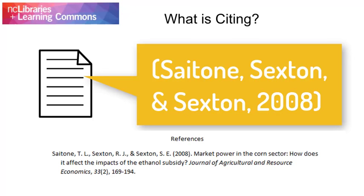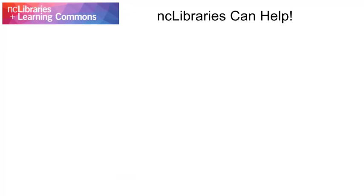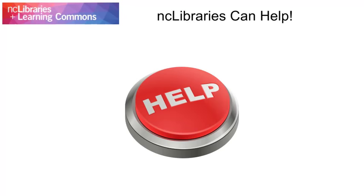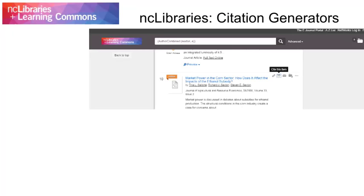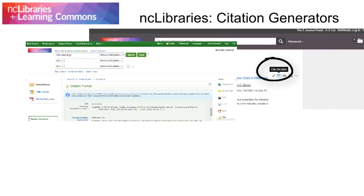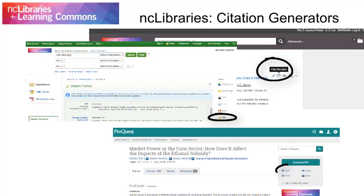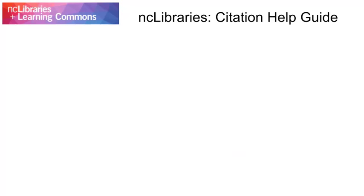There are many different citation styles. Niagara College commonly uses APA and IEEE, but check with your instructor to see what you'll be using for your class. Citing your sources may seem like a lot of extra work, but NC Libraries is here to help. Items from NC Libraries databases have handy citation generators built right in. Citation generators are pretty great, but you should always proofread what they create.